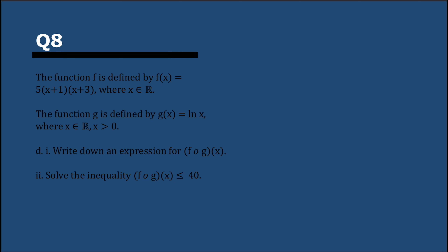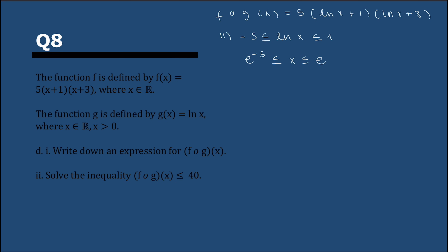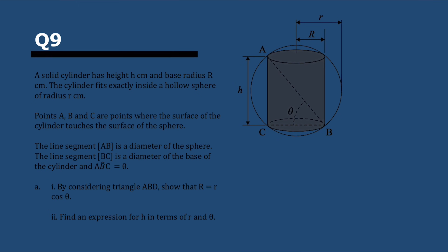The second part is completely different: g(x) = ln x. We have to write f∘g, substituting ln x for x: f(g(x)) = 5(ln x + 1)(ln x + 3). Then we solve f∘g < 40. We can reuse the solution from before — the inequality holds for −5 < x < 1 — but now instead of x it's ln x. So we substitute back using the exponential to find the solution in terms of x.